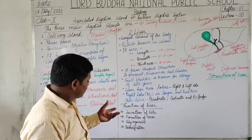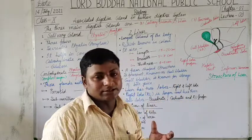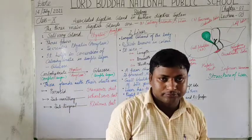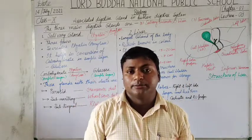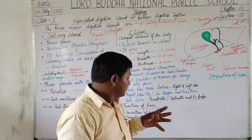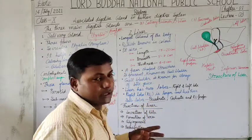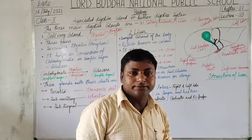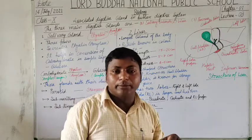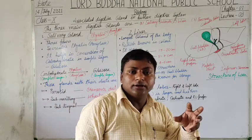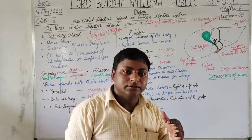Hepatocytes are known for the formation of bile juice. The bile juice consists of bile salts and bile pigments. The bile salts have enzymatic action and also help in detoxification of our food. The bile pigments provide a certain color to the digested food.